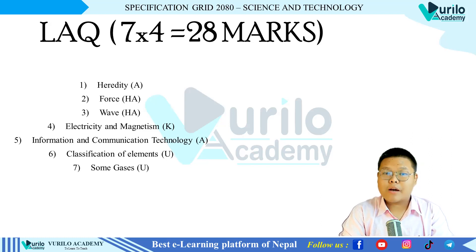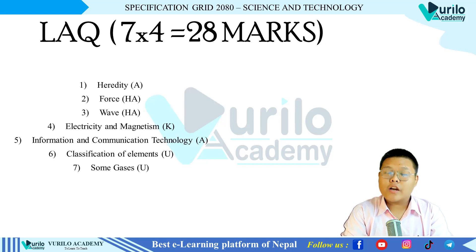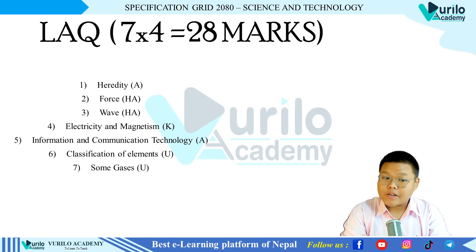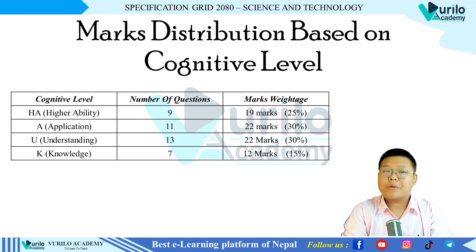For long answer questions, there are 7 questions worth 4 marks each — 7 × 4 = 28 marks total. Chapter-wise cognitive levels: Force and Motion is higher ability, Wave is higher ability, Electricity and Magnetism is knowledge-based, Information and Communication Technology is application-based, Classification of Living Beings is understanding level, and Gases is understanding level. This covers which chapters carry which types of questions.